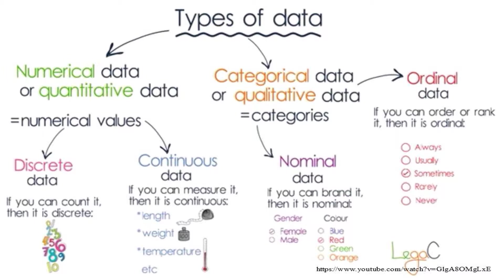Nominal variable: if you can label or brand it, then it is nominal – examples include sex (male/female), color, or nationality. Ordinal data: if you can order or rank it, then it is ordinal. Examples of ordinal variables include academic level, grade, temperature categories (quite cold, cool), and height categories (short, average, tall).